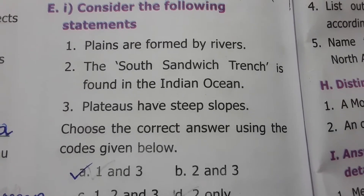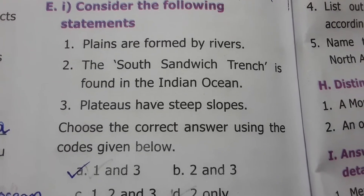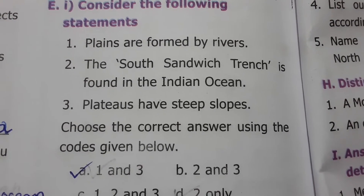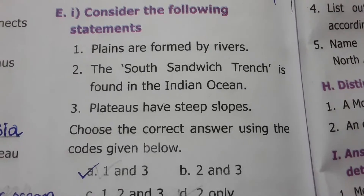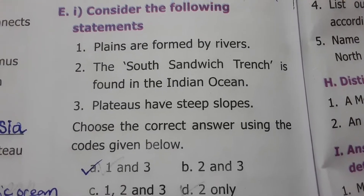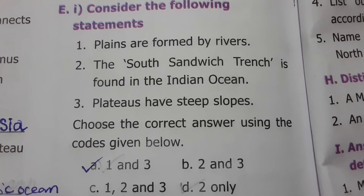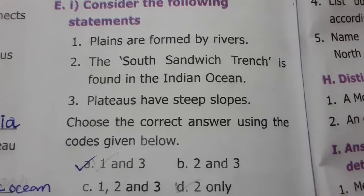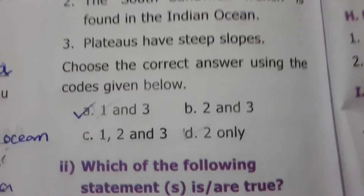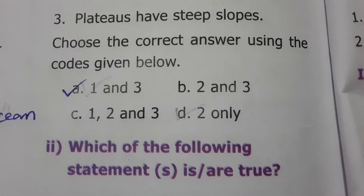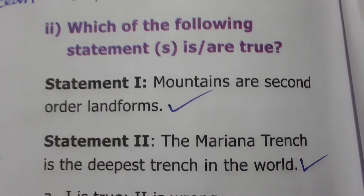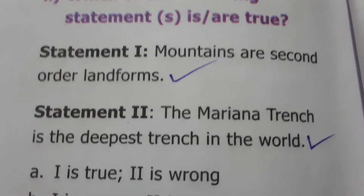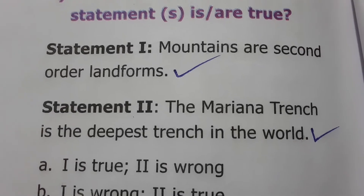Consider the following statements. Statement 1: Plains are formed by rivers — this is correct. Statement 2: The South Sandwich Trench is found in the Indian Ocean — this is wrong. Statement 3: Plateaus have steep slopes — this is correct. So the answer is option A: statements 1 and 3.